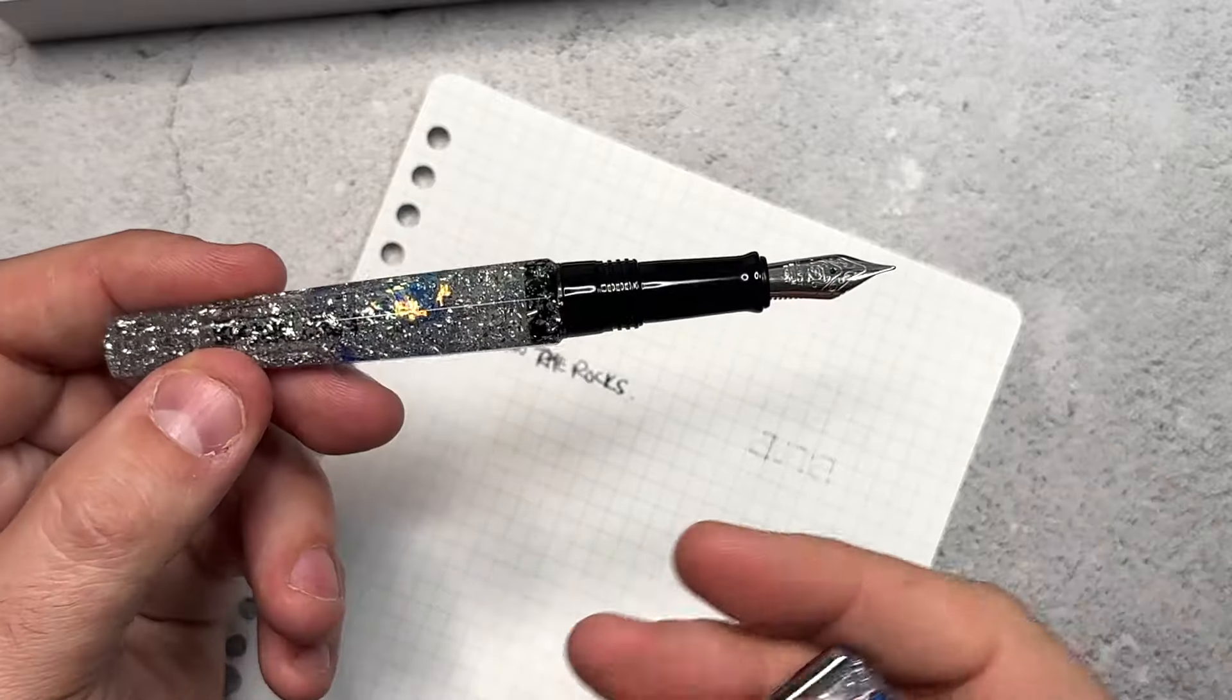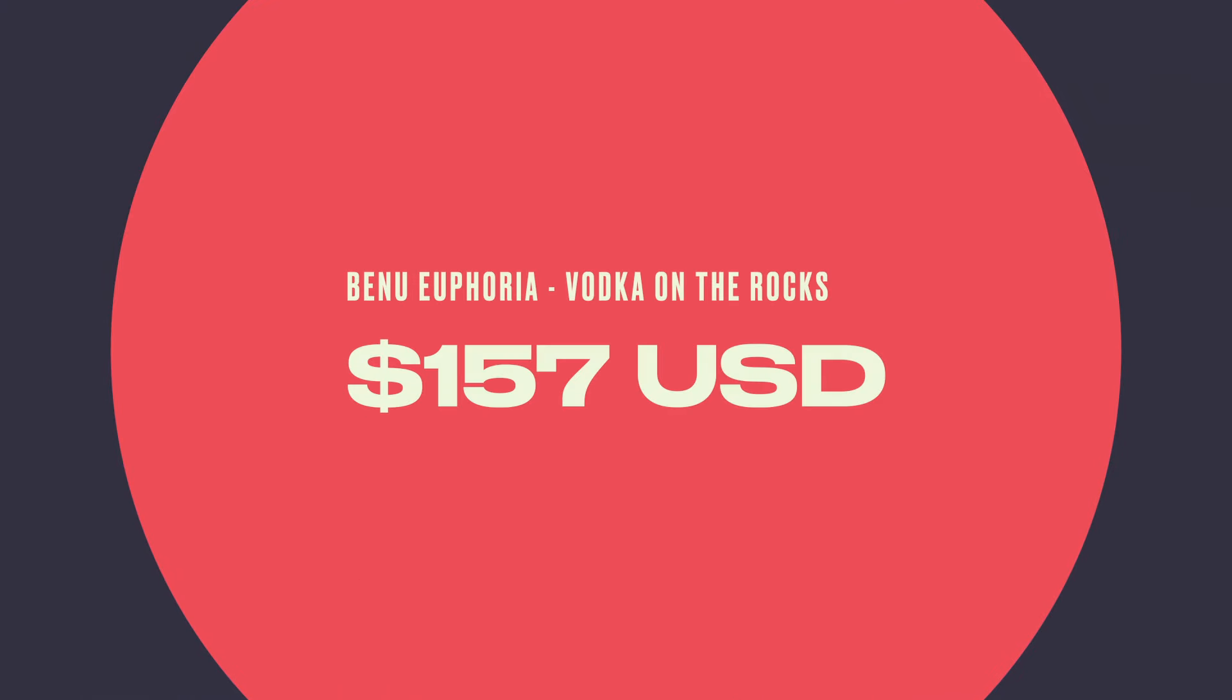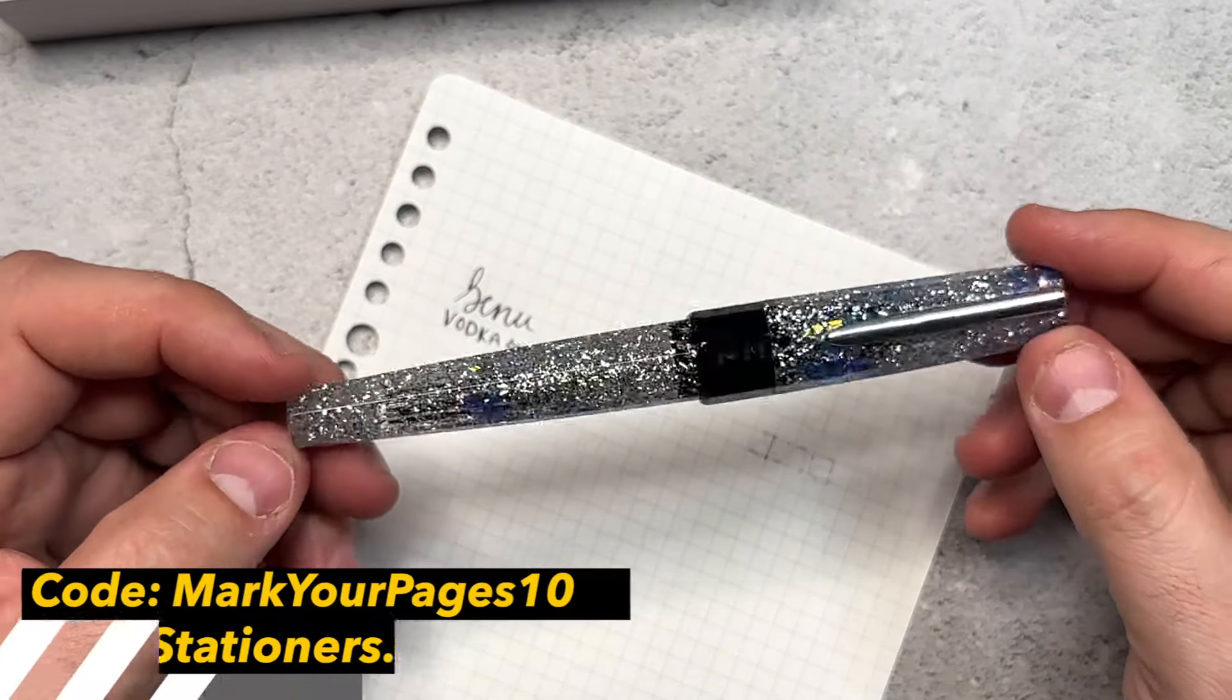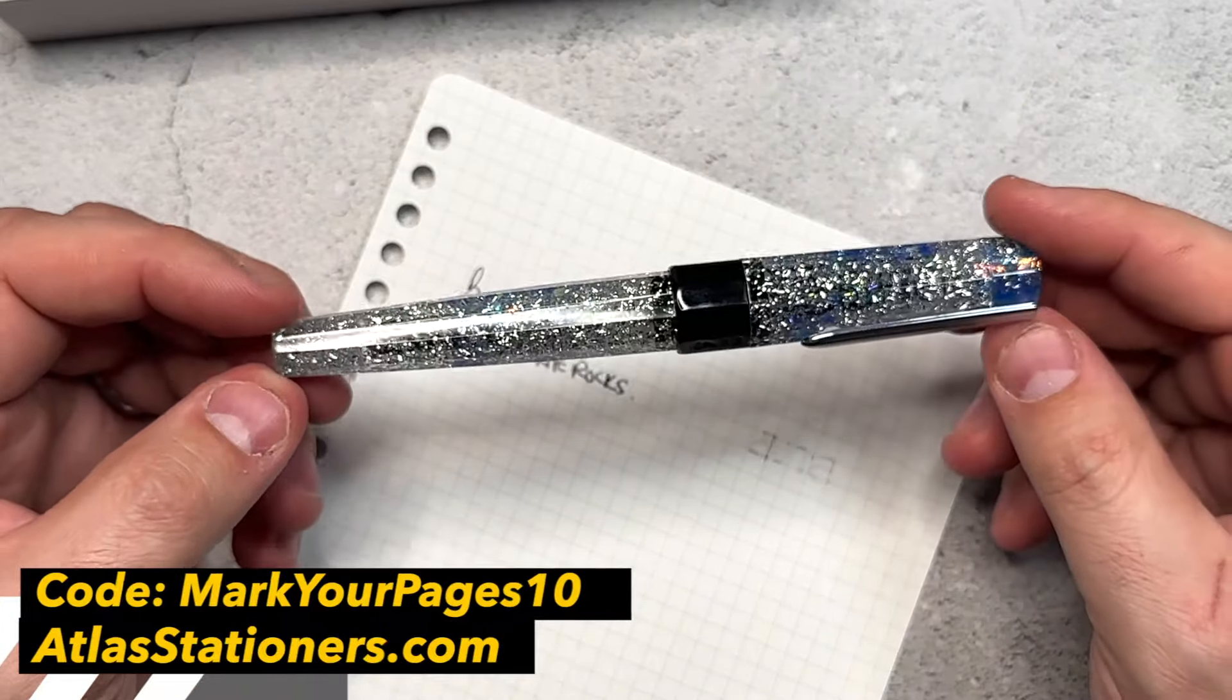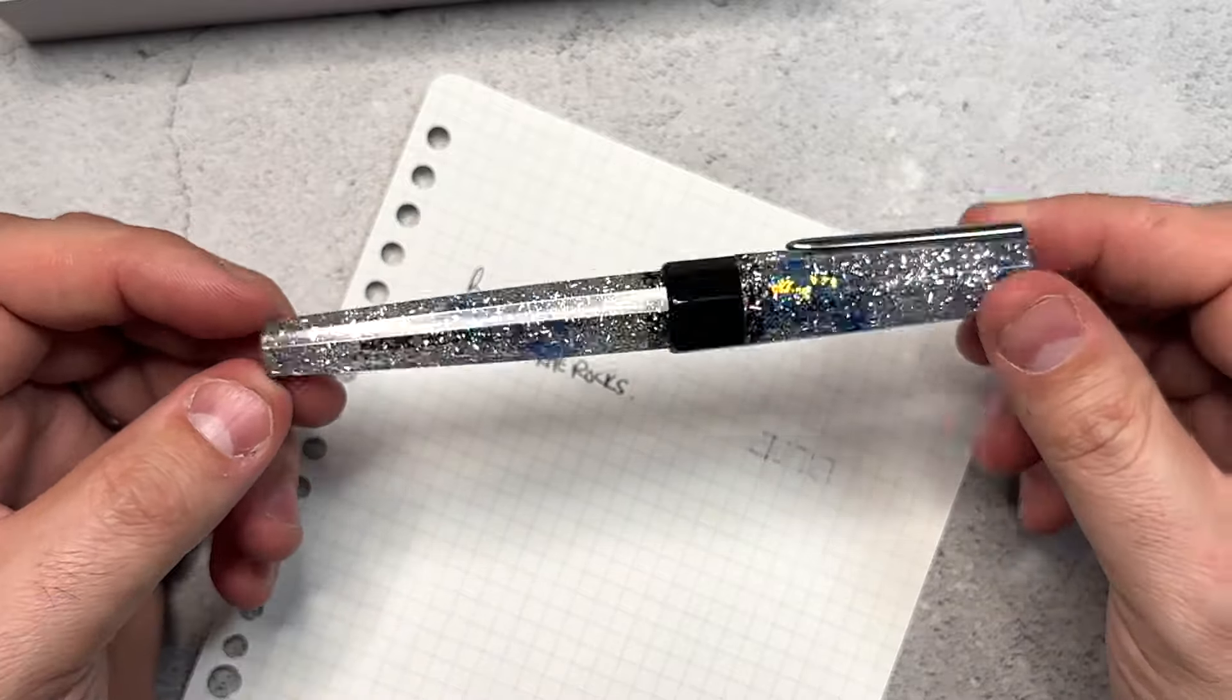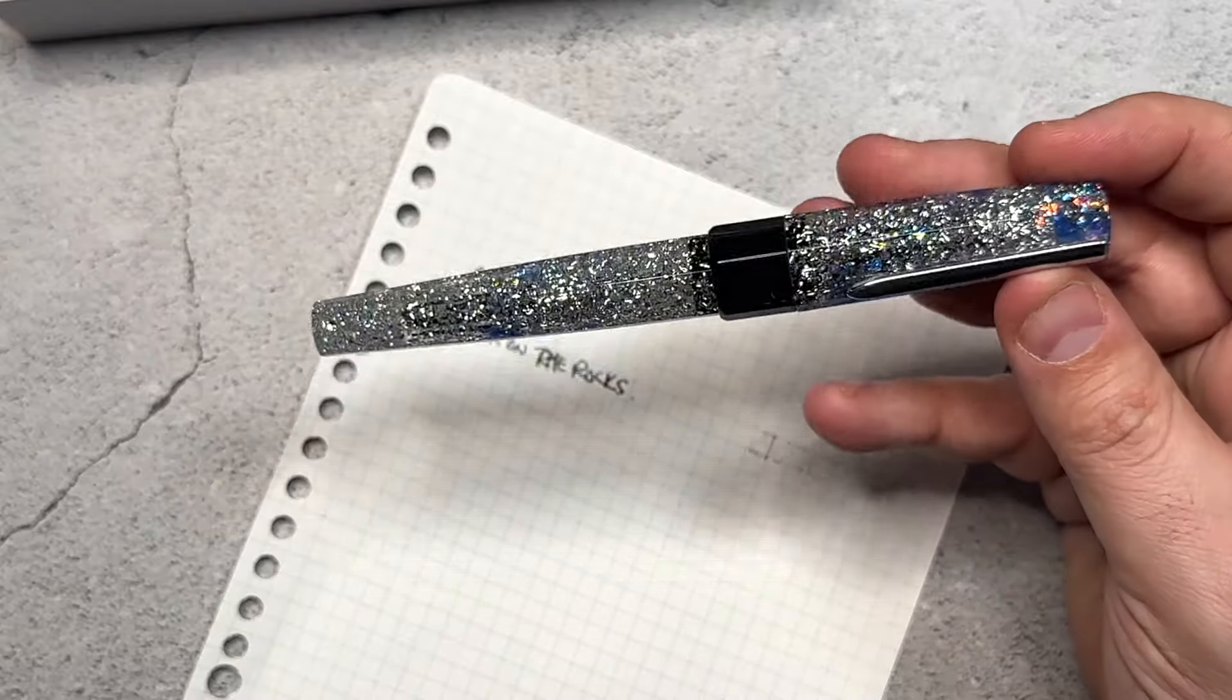We have a fine point iridium nib on this one here. Just loving it all together. The black, the sparkle, the nib, all the stuff is good. This pen itself runs for about $157 but if you purchase this from Atlas Stationers and use my discount code markyourpages10 it's actually going to save you almost $16 off of that pen. So a good savings, beautiful pen. Excited to have it as a part of my collection.